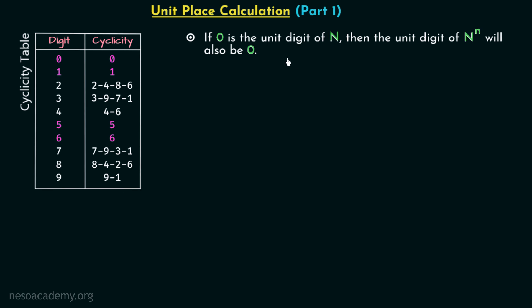In this example, let's say N is equal to 260, and we want to calculate the unit digit of 260 raised to power 7. As per this rule, the unit digit of 260 raised to power 7 will be equal to zero, because N, which is 260, has the unit digit equal to zero.